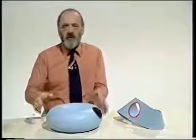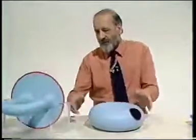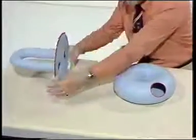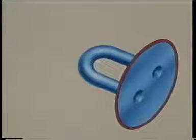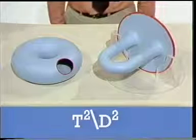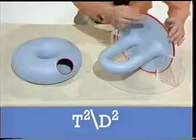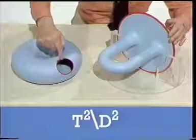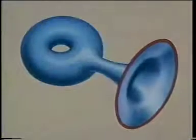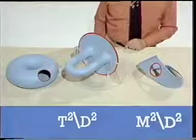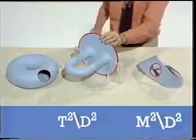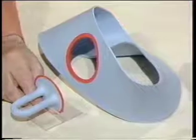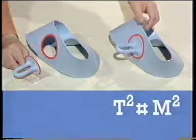We cut a disc out of each surface, and we have to glue the edges of the holes. But before we do that, I want to show you that we can deform this torus minus disc into this shape. So a torus with a disc removed is topologically equivalent to this shape, where this boundary comes from the edge of the original hole. So to get the connected sum, we have to glue this edge to this one on the Möbius band, giving us a Möbius band with a handle attached.